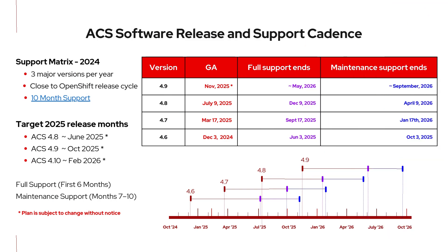With every new ACS release comes a new support cadence. ACS full support begins at the general availability of the minor version and ends after a six-month period, in which case maintenance support kicks in. We expect every ACS user to keep their environments up to the most current supported micro version. Notes are in the description below for the full support cadence and the OpenShift operator lifecycle.